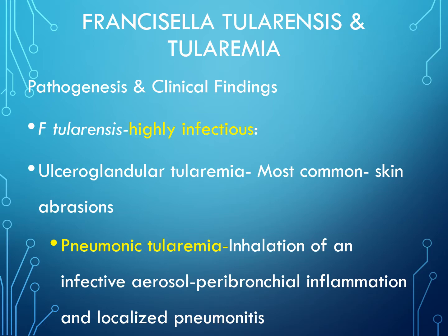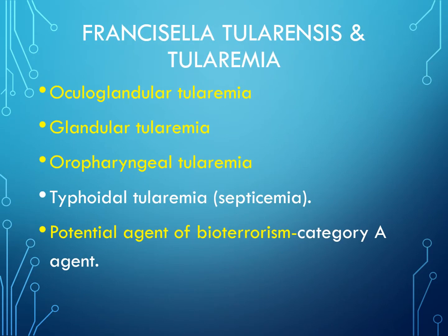Other forms include oculoglandular tularemia, which involves infection through a contaminated finger to the eye; glandular tularemia with enlargement of lymph nodes but no ulcers or draining sinuses; oropharyngeal tularemia affecting the oropharyngeal area; and typhoidal tularemia, which manifests as septicemia. Notably, Francisella tularensis is categorized as a Category A agent for bioterrorism.